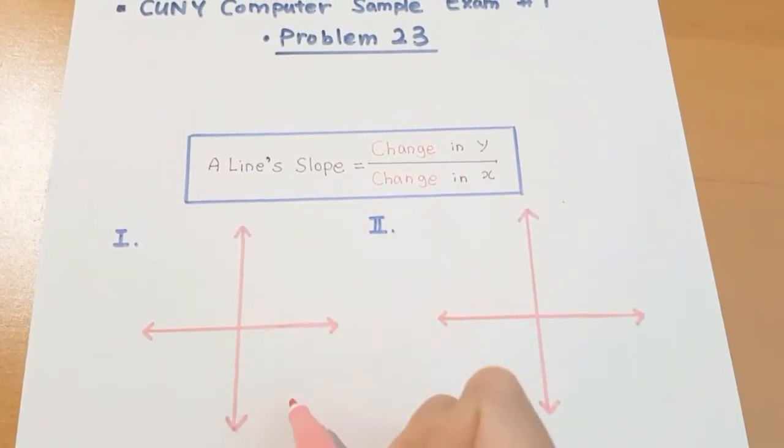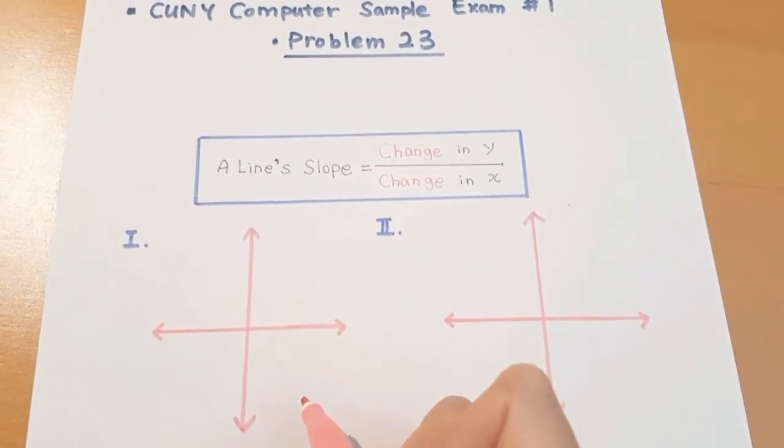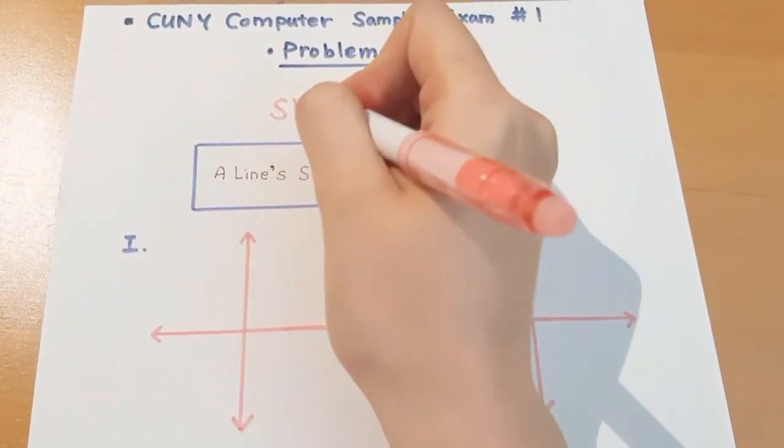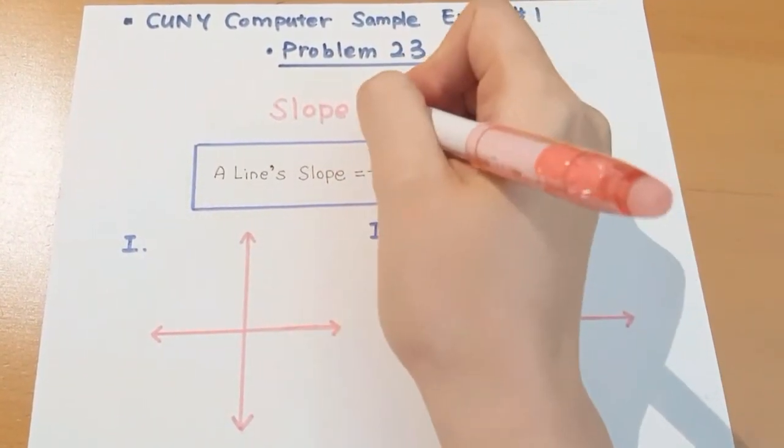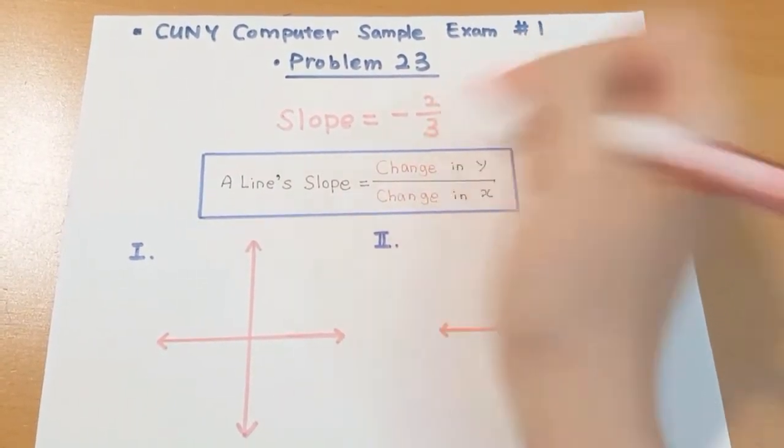This question asks us to find the graph that has the slope which has negative 2 over 3.